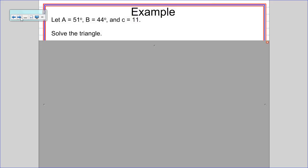Okay, so A equals 51 degrees, B equals 44 degrees, and C equals 11. See if you can solve this triangle. That means find all the sides and all the angles. I'm going to show you some work in just a second, so pause the video while you work.